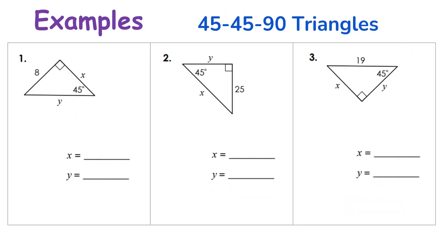Let's take a look at some examples. We want to find x and y in each figure. Opposite the right angle would be y. These two sides would be my legs, so my legs are congruent, meaning x would be eight. Remember the hypotenuse is always the square root of two times the leg, so the hypotenuse would be eight times the square root of two, which would be y.